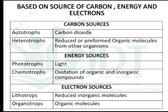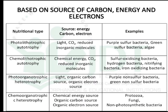For electron sources, organisms are classified into lithotrophs, which use electrons from reduced inorganic molecules, and organotrophs, which use organic molecules. Based on this, organisms can be classified into four main groups. The first is photolithotrophic autotrophs — photo means they use light energy, litho means reduced inorganic molecules, and their carbon source is carbon dioxide.